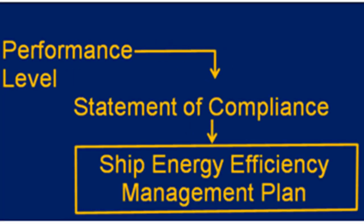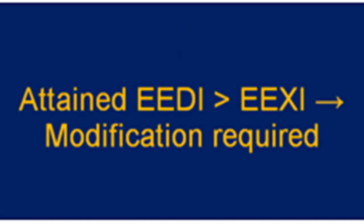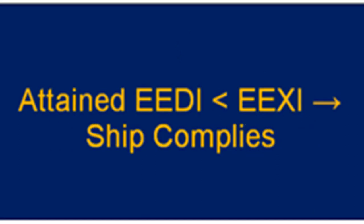If a ship receives an E rating for one year or a D rating for three consecutive years, it must demonstrate how it will improve energy efficiency, and that must be implemented in the SEEMP. The performance level is recorded in a statement of compliance and analyzed in the ship's energy efficiency management plan. EEDI was a dynamic figure, and the EEDI figure obtained after applying reduction by end of 2022 should synchronize with the EEXI figure. Ships with attained EEDI less than required EEXI are already compliant.